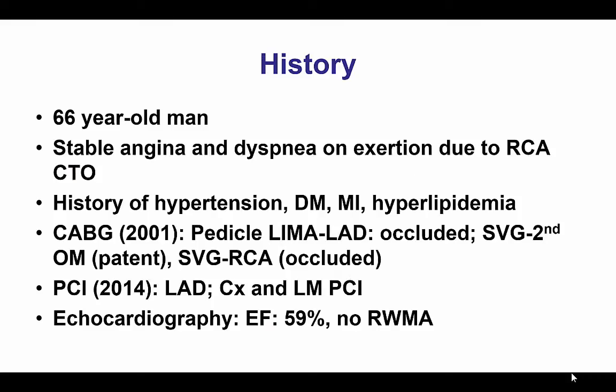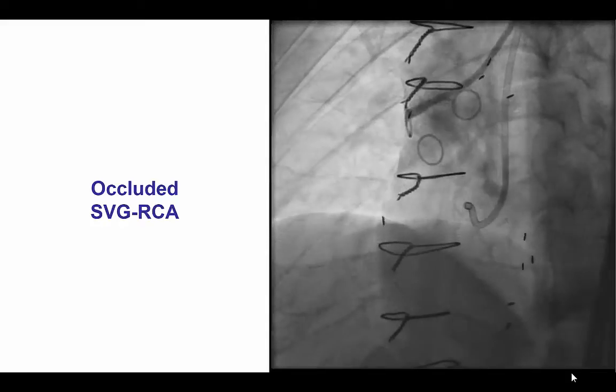The patient was a 66-year-old man who presented with stable angina due to a right coronary CTO. He had a previous coronary bypass with an occluded LIMA as well as an occluded vein graft to PDA. However, he did have a patent vein graft to a second obtuse marginal branch. He had undergone PCI of the circumflex on the left main and had a normal ejection fraction without wall motion abnormalities, indicating viability.